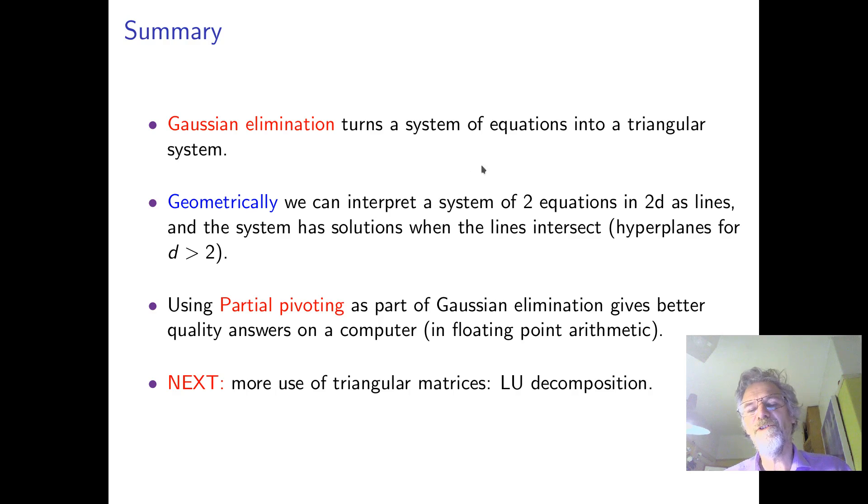So Gaussian elimination turns a system of equations into an upper triangular system. If you're thinking geometrically, we can interpret a system of either lines in two dimensions or planes in three dimensions. And the idea of partial pivoting is just to give better floating point arithmetic. So the operations that we do to make an upper triangular matrix can be thought of as multiplying by a matrix on the left. In other words, each of these row operations corresponds to a matrix. And in the next video clip, we're going to see how we accumulate those matrices and write our original matrix as a lower triangular matrix times an upper triangular matrix.